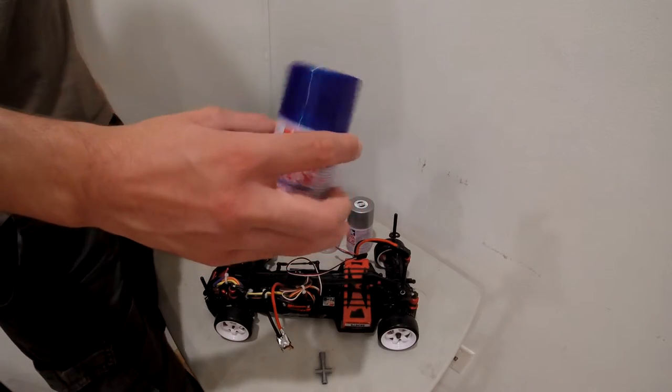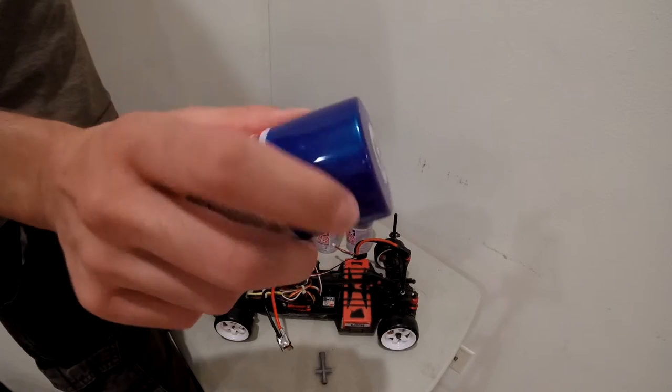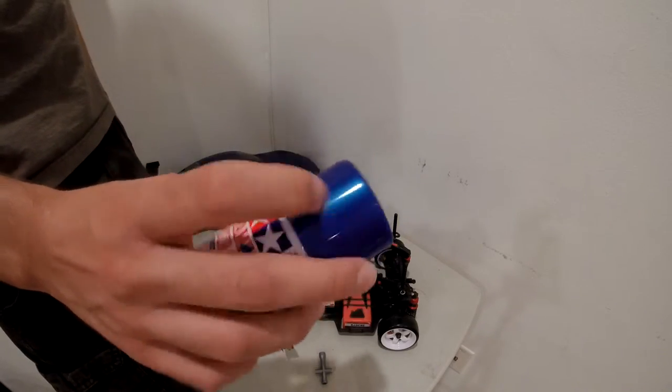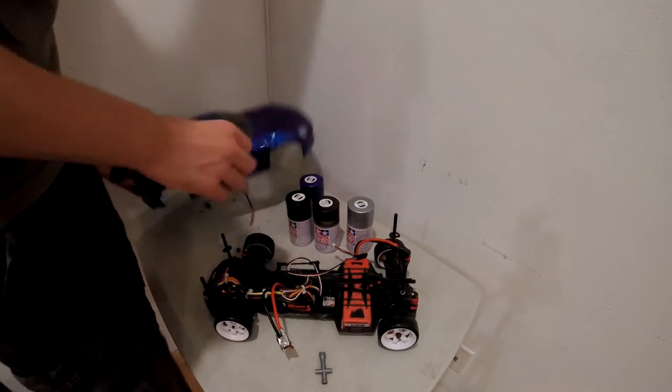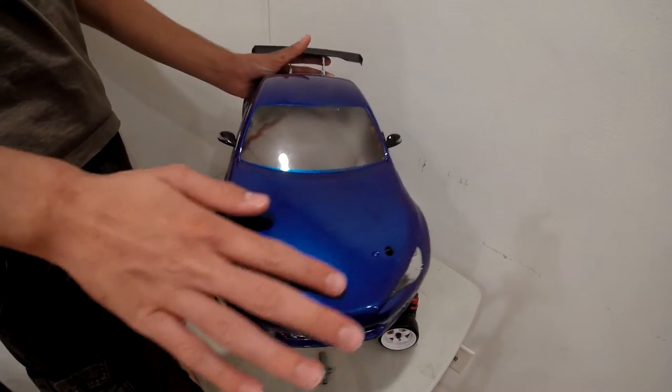As you can see, maybe I don't know how it's going to look from the camera, but it's kind of like a transparent color. That's why you get like this kind of midnight blue glossy look to the body.